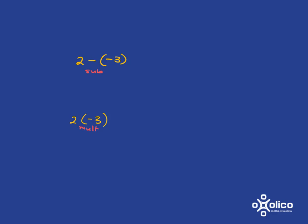So then this one will become, if we are subtracting a negative, taking away some cold, it's the same as adding. So this is going to be the same as 2 plus 3, which is 5.